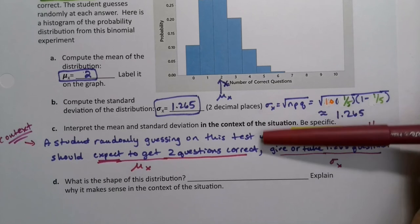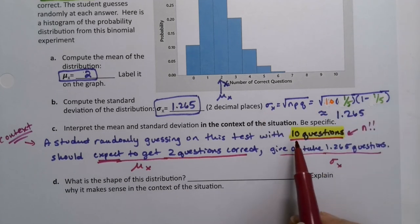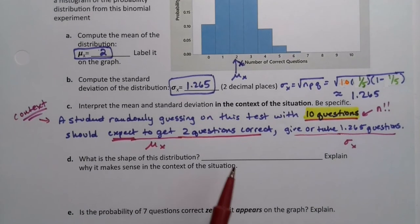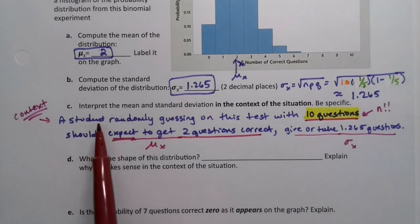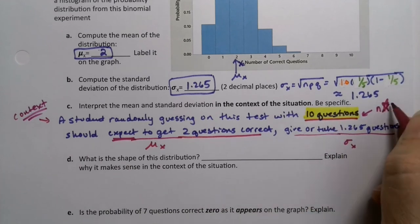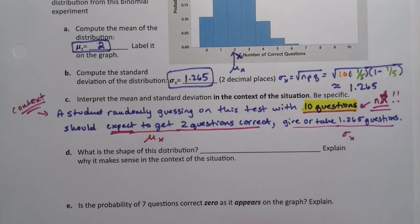It has to be there for binomial problems. Because otherwise you're saying, I expect to get two questions correct out of how many? Out of 50? Out of 70? So you have to say out of 10. You have to put your n value in there. That's a new component, part of your context. Your context has to include your n.